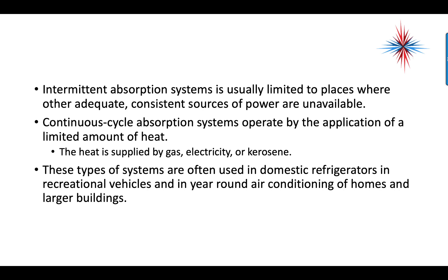Continuous cycle absorption systems operate by an application of a limited amount of heat. The heat is supplied by electricity, gas, or kerosene. These types of systems are used in domestic refrigerators, in recreational vehicles, and in year-round air conditioning of homes and larger buildings.